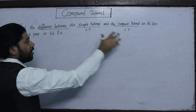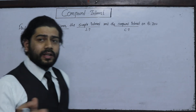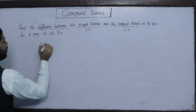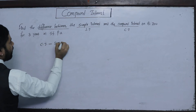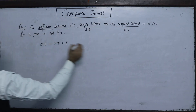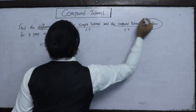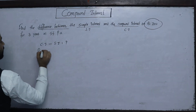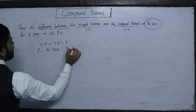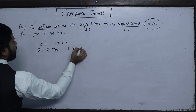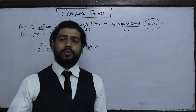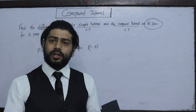The difference between CI and SI is 700 rupees. The time T is equal to 3 years and the rate R is equal to 5 percent. The amounts of compound interest and simple interest will be different, as you can see.